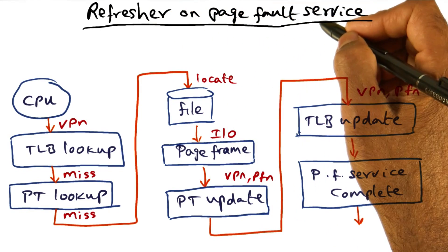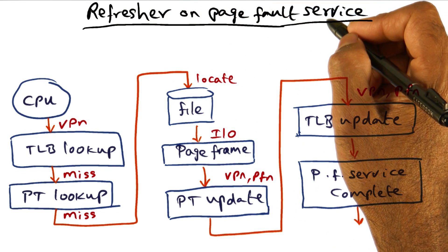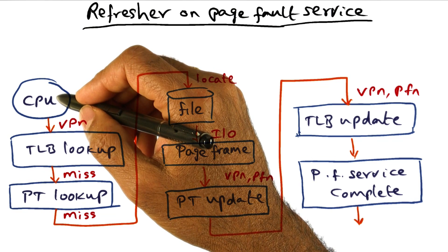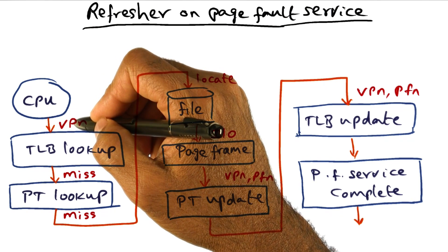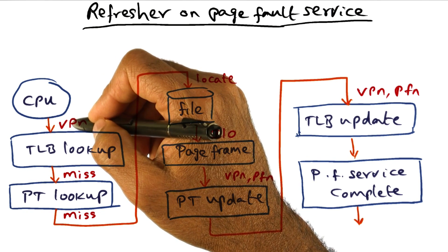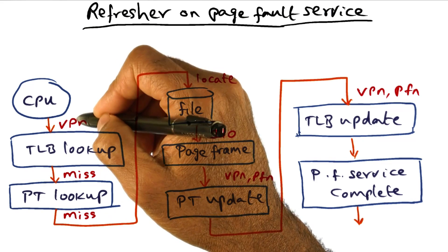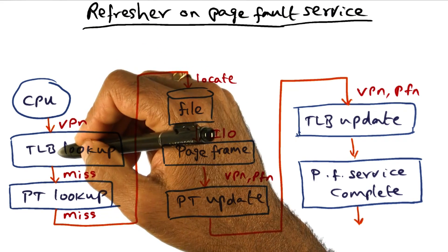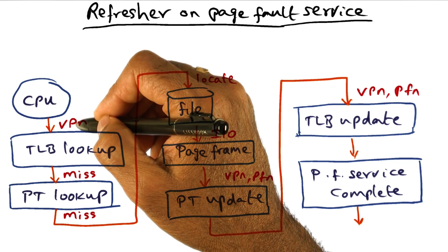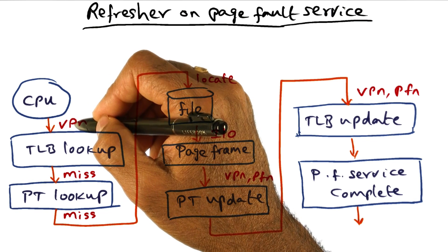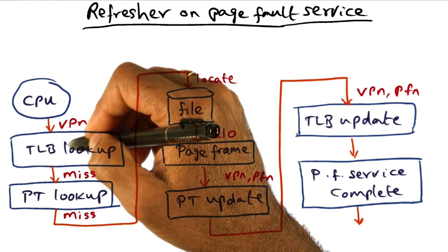Let's understand exactly what happens during a page fault service. When a thread is executing on the CPU, it generates a virtual address. The hardware takes that virtual page number and looks up the TLB to see if it can translate that virtual page to a physical page frame that contains the contents of that page.